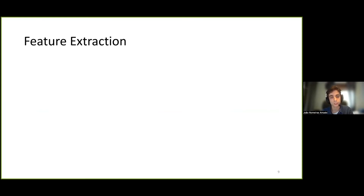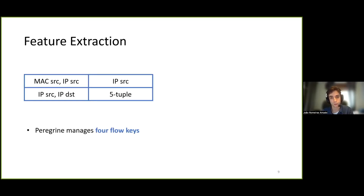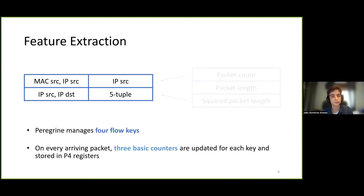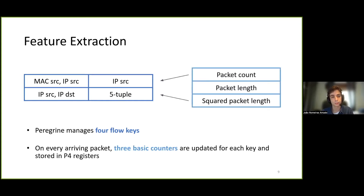I'll now describe Peregrine's data plane design and implementation, starting by the feature extraction component. For each packet that arrives on the switch, we extract features pertaining to four flowkeys: IPSource, IPSource/IPDestination, and 5-Tuple. The specific counters updated for each flowkey are the packet count, the packet length, and the squared packet length. These counters are stored in registers so that they persist across multiple packets.